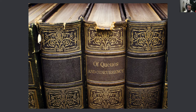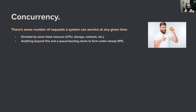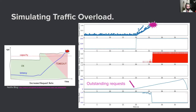There's some fixed number of requests that a system can handle at any time, dictated by resources like CPU, storage, and network. Anything beyond that — if requests come in requiring more resources than the machine has — a queue will start to form if the incoming request rate doesn't change. About the halfway point in the simulation, the outstanding request count steadily increases. As it increases, latencies steadily increase until all the requests just start timing out.